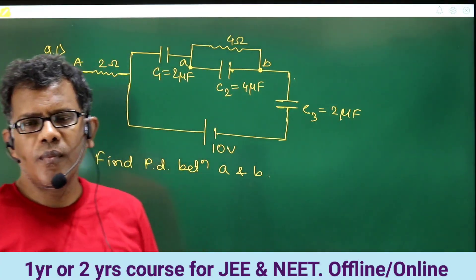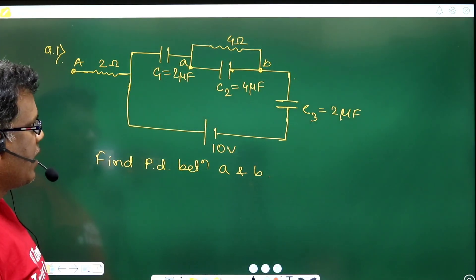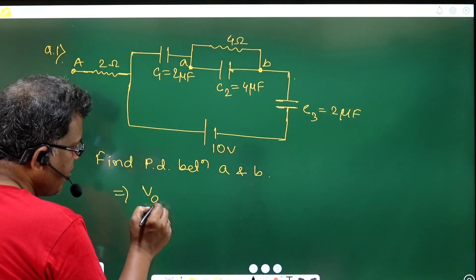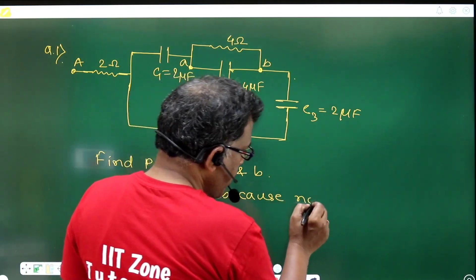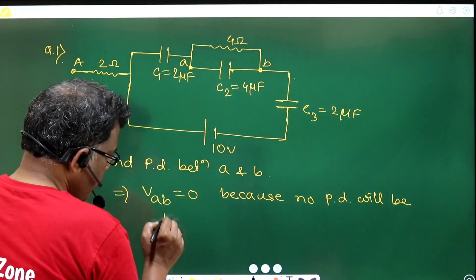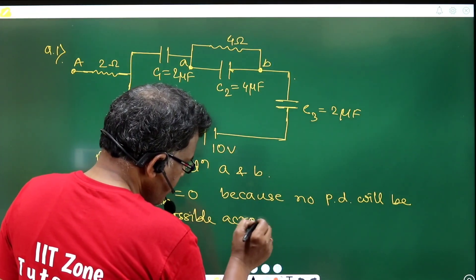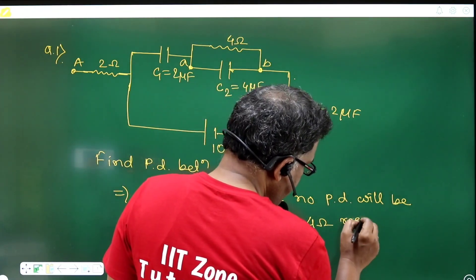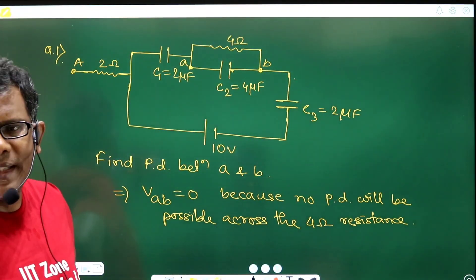4 ohm resistance will be nothing but other than a simple conducting wire only. So if the 4 ohm resistor becomes a simple conducting wire, then that means across that 4 ohm no potential drop. So that means it is simply suggesting that Vab will be zero because no potential drop will be possible across the 4 ohm resistance. Will it be possible to have a potential difference across 4 ohm at steady state?